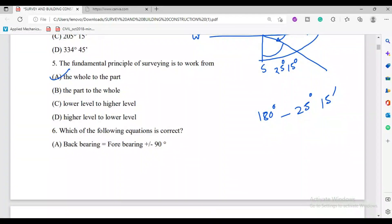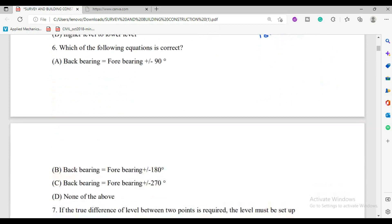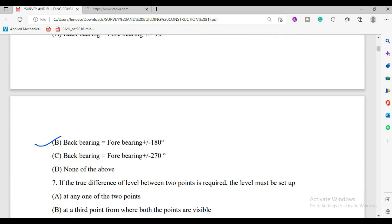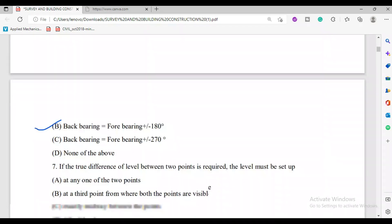Next, a relationship. Which of the following equation is correct? I discussed in my previous class that back bearing and fore bearing, the difference is 180 degrees. So you can say option B is correct: back bearing is equal to fore bearing plus minus 180 degrees.